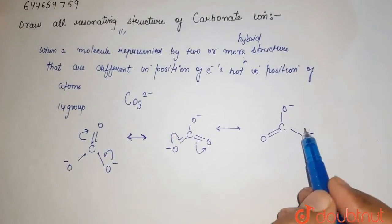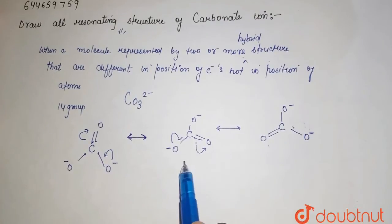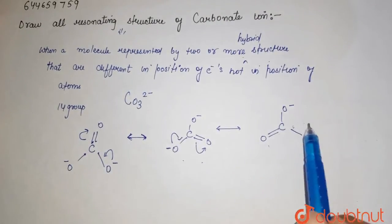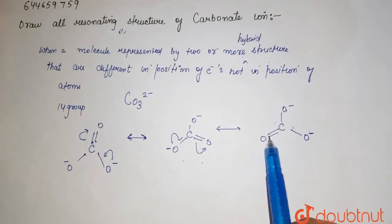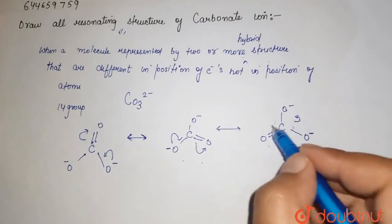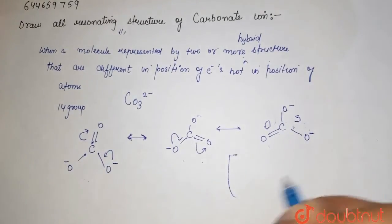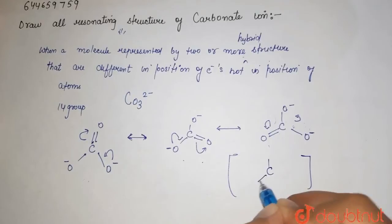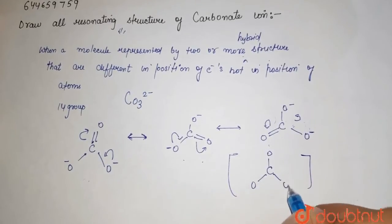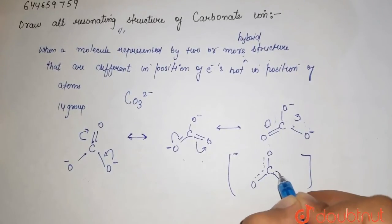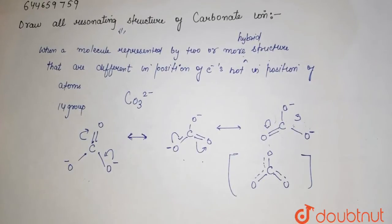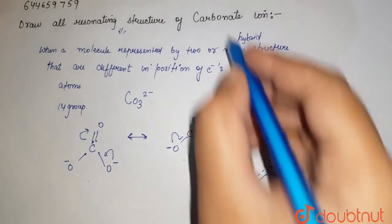If you again move the charge and shift the double bond, you get a third resonating structure. These are the three resonating structures, or the resonance hybrid, of the carbonate ion. The bonds are continuously moving — there is a rapid interconversion of these bonds. So these are the resonating structures of your carbonate ion.